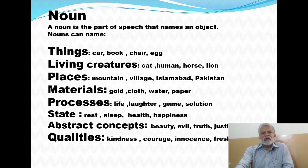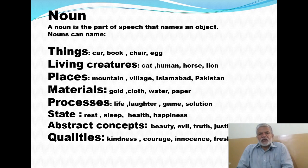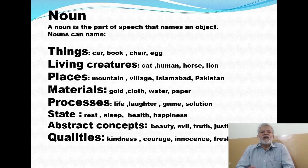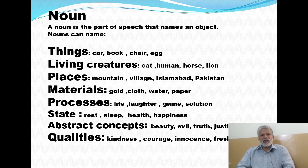Now first of all we'll discuss noun in detail. A noun is a part of speech that names an object — that's very simple, any name is a noun. A noun is a word used as the name of anything. Nouns can name different types of things. Just look around yourself and you will see a number of things in your room. All those things have their specific names, and all those names are nouns.